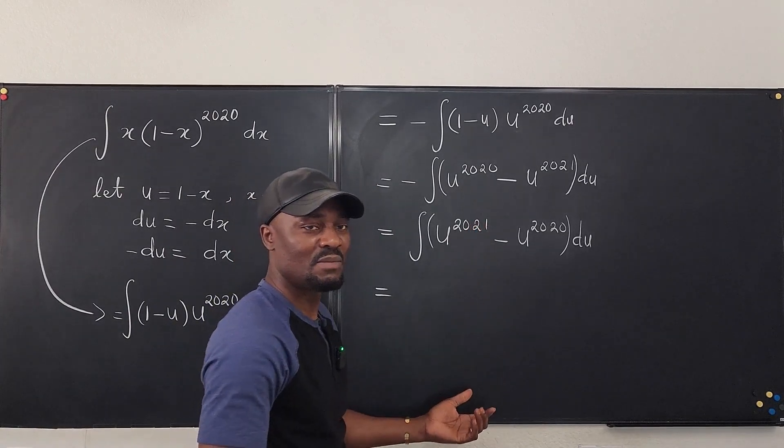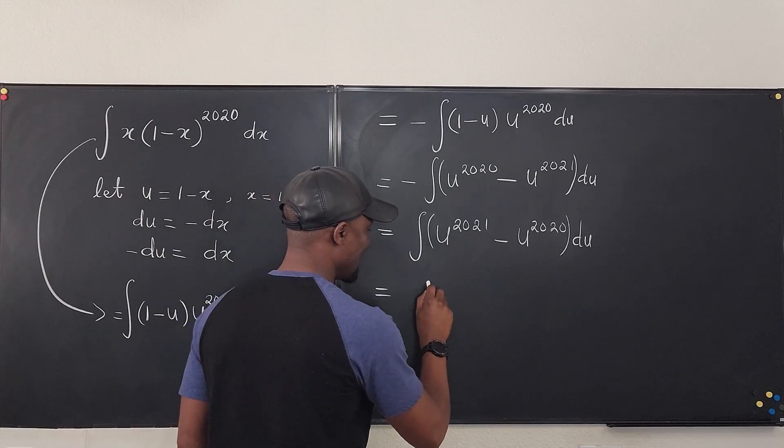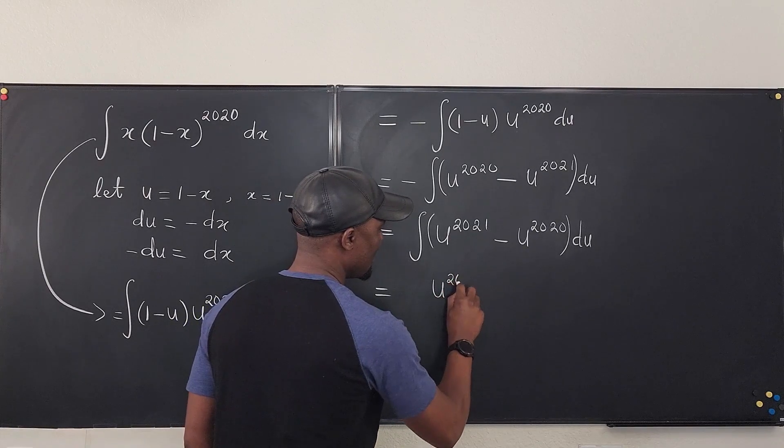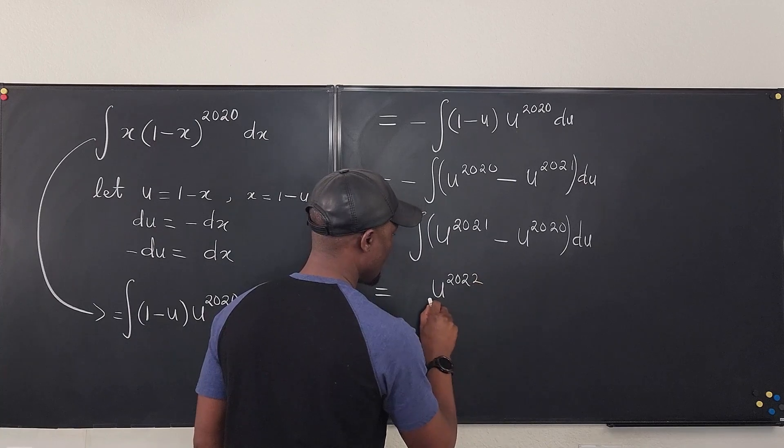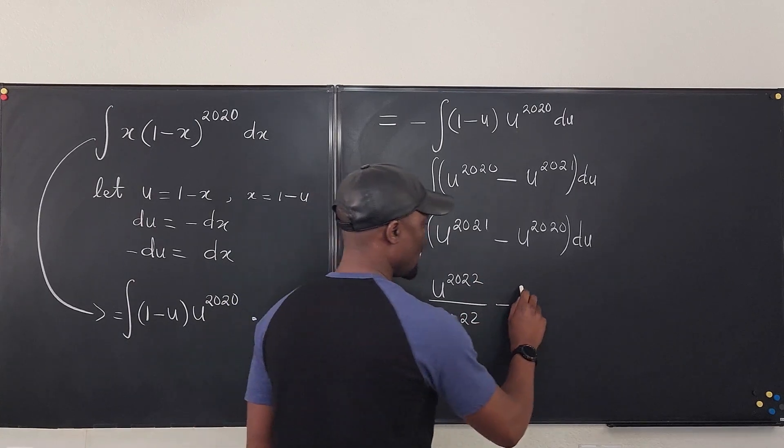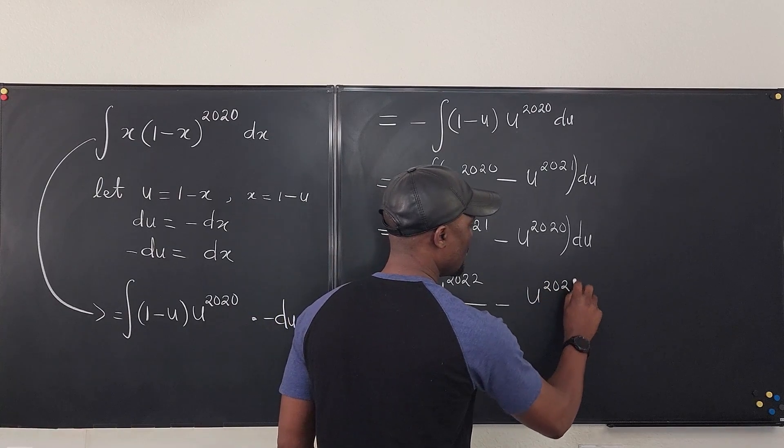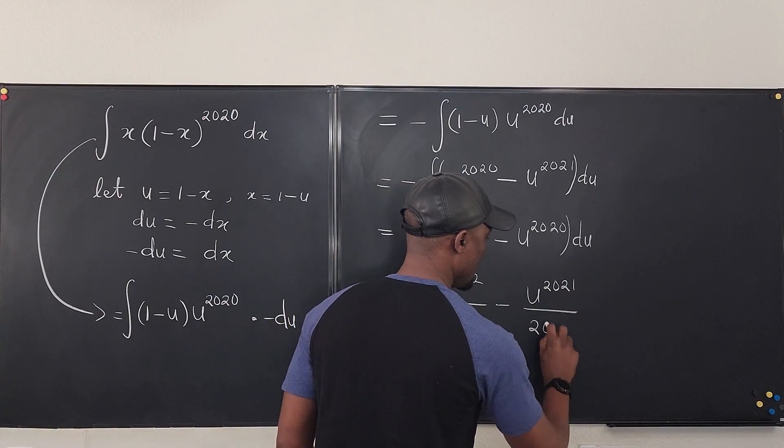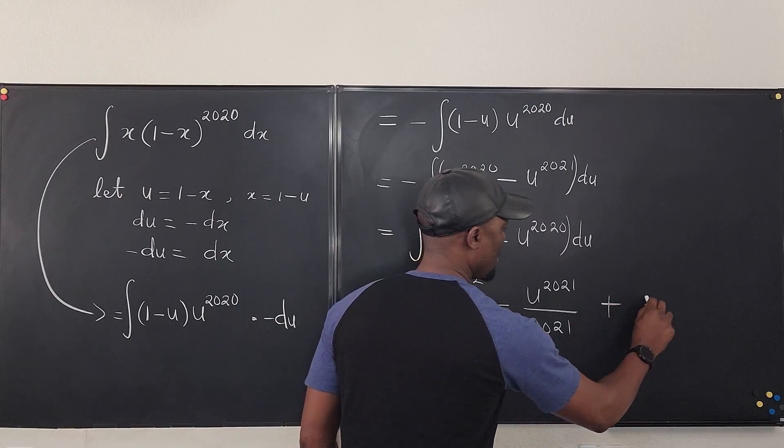So what do we have if we integrate this? You add one to this, divide by - it's just easy. So this is going to be u to the 2022 divided by 2022 minus u to the 2021 divided by 2021 plus C.